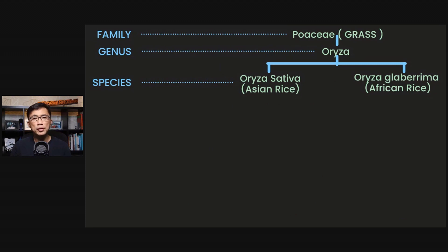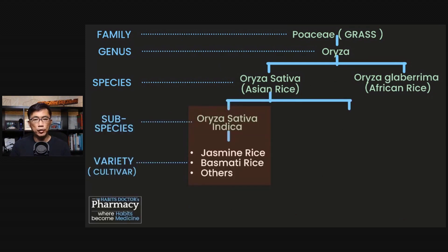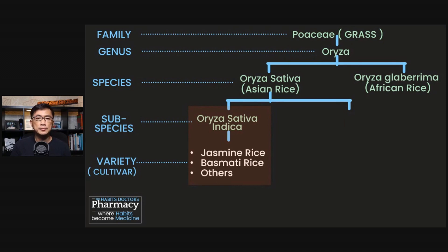The rice we consume are mostly from two subspecies. The Oryza sativa indica — indica rice are often long grain, thin, and fluffy. There are many different varieties or cultivars of indica rice. Basmati rice and jasmine rice are two of the very popular indica rice that many of us in Asia, including here in Singapore, are familiar with.